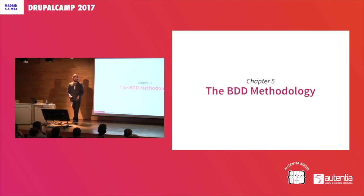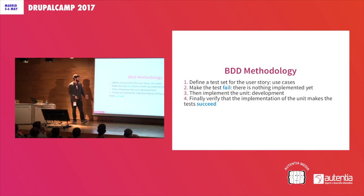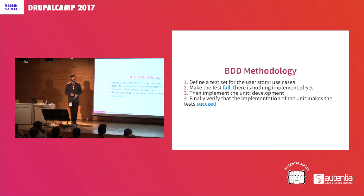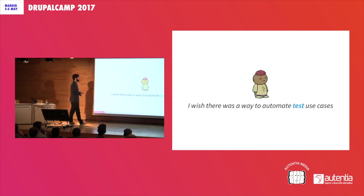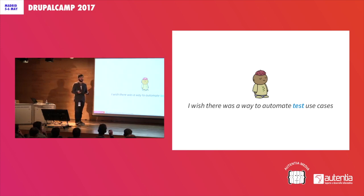I think everyone can come to the conclusion of what BDD is about. First, define the tests and use cases with the client. Then, of course, those tests are going to fail because there is no code — we haven't developed anything yet. Then, start implementing that in the application. The last step is to verify that we have accomplished what we wanted. Is there any way to test that automatically? Of course — you're writing it on paper, but you need to check it manually. We've talked with the client and we're sure that what we're coding is what the client wants. But doing it manually?